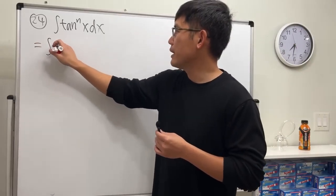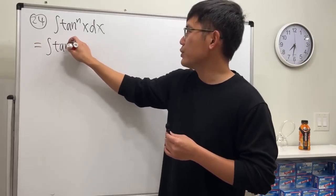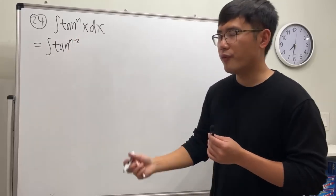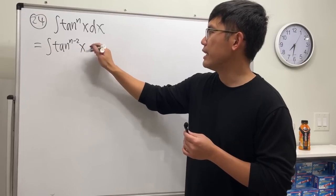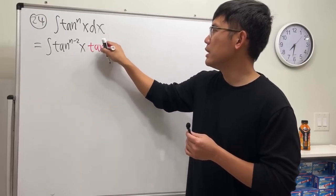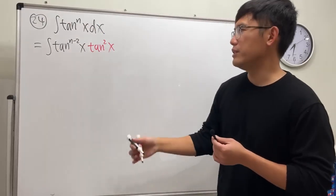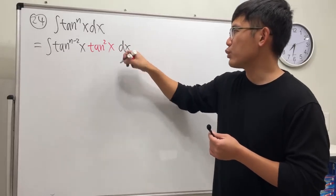Here, we look at the integral. Let me break it down as tangent to the n. I will take out two of them, so tangent to the n minus 2, x, times tangent square x. And of course together we still have the same as the original, so they are equivalent.